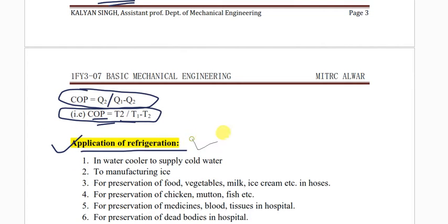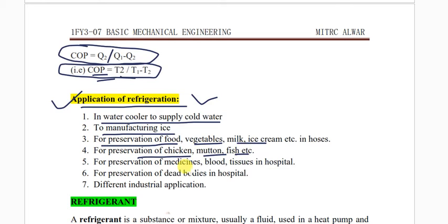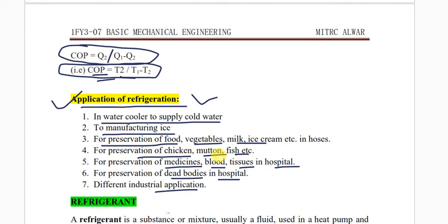Applications of refrigeration include: water cooling to supply cold water, manufacturing ice, food preservation — food, vegetables, milk, chicken, fish — preservation of medicines, blood and tissues in hospitals, preservation of dead bodies in hospitals, and various industrial applications using different types of refrigeration systems and refrigerants.